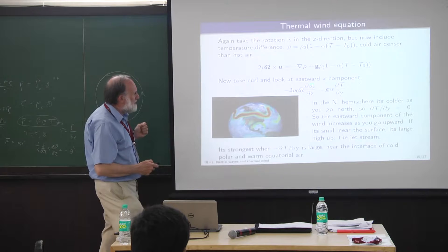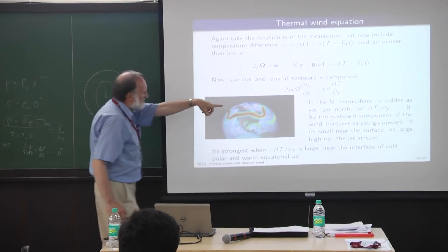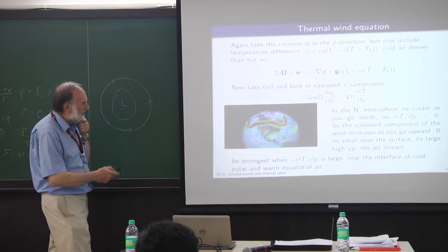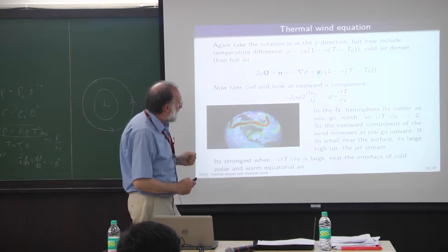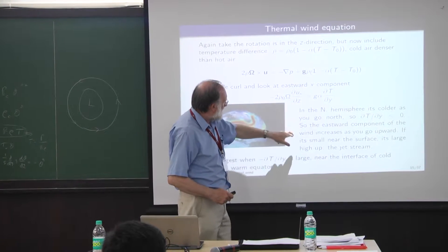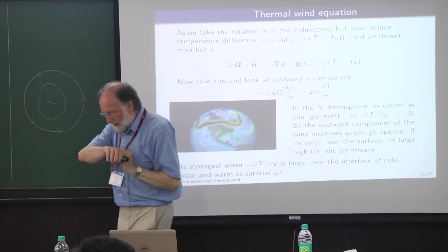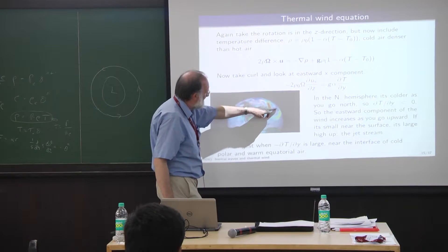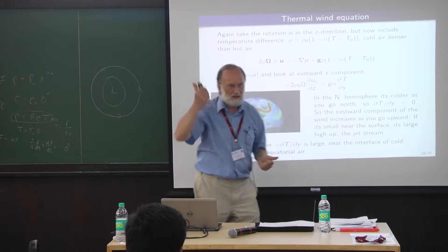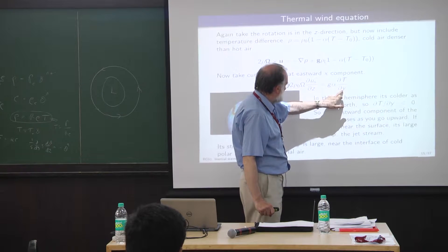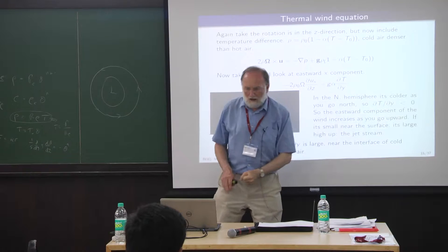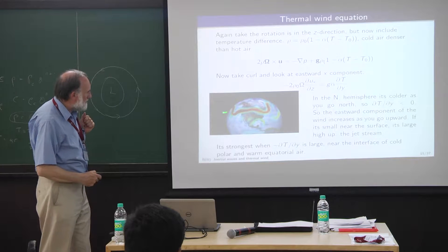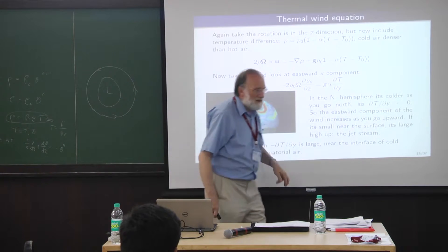The most interesting component is when x is in the eastward direction, corresponding to east-west flows like those on Jupiter. This tells us that the rate of change of east-west flow with height equals the rate of change of temperature in the latitudinal direction. If x is eastward, y is northward, and z is upward, then a latitudinal temperature gradient produces a wind that is a function of z. This is called the thermal wind.